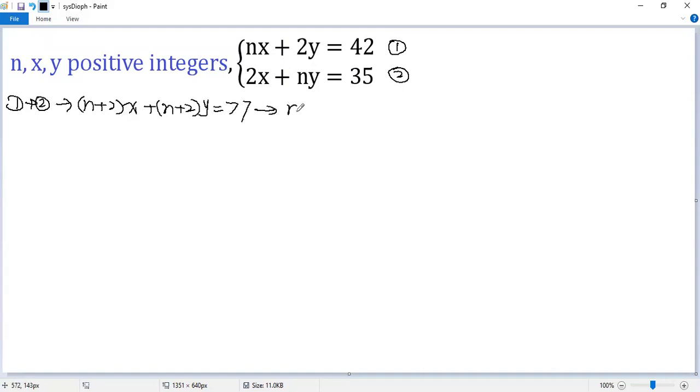Now take the common factor n plus 2 out. So we get x plus y equals 77. We denote there as 3.